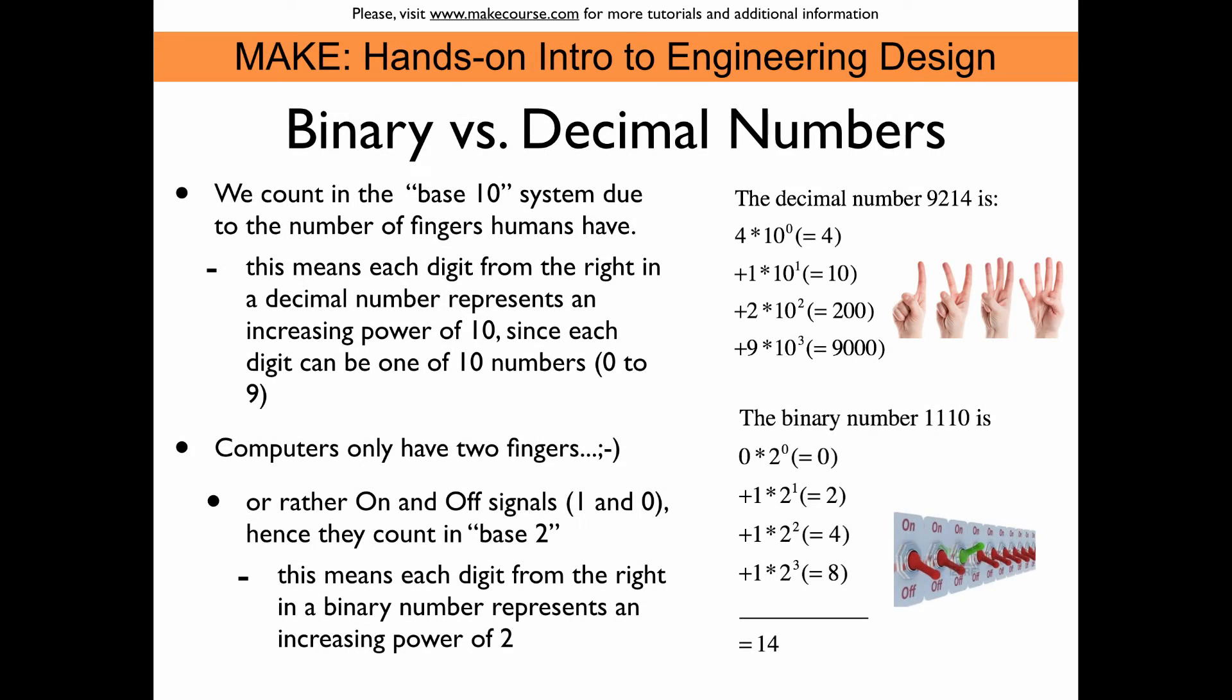So before we start playing with the Arduino, let me introduce binary and decimal numbers. So usually we count in the so-called base 10 system, and the reason for that is of course the number of fingers that we have. Each digit that we have in a number represents 10 different numbers.